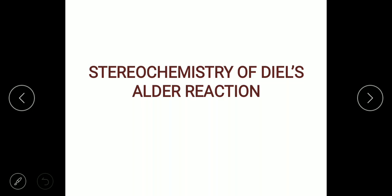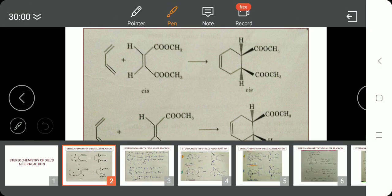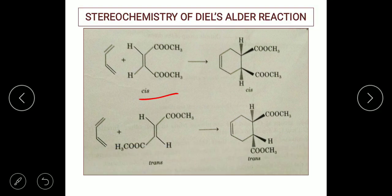Hello students, today we will learn about stereochemistry of the Diels-Alder reaction. We know that they are highly stereospecific in nature. When we have a cis substrate, a cis dienophile is always going to give rise to the cis product, and the trans dienophile will give rise to the trans product.